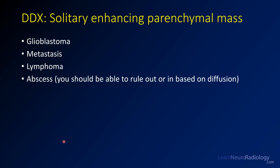Abscesses are going to have centrally bright DWI, which comes from the pus. Infection can occur but unusual infections are less common. If you really hit on these top three — GBM, metastases, and lymphoma — that's going to cover more than 95 percent of your cases for a solitary enhancing parenchymal mass.